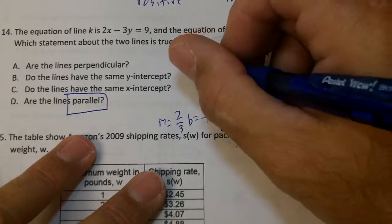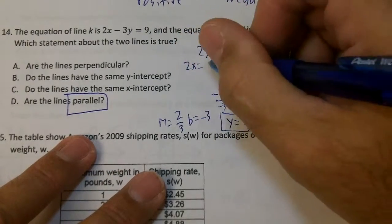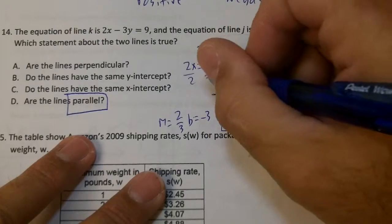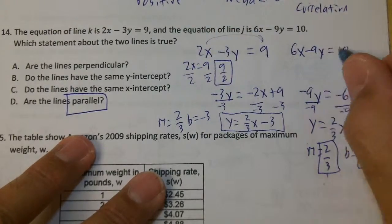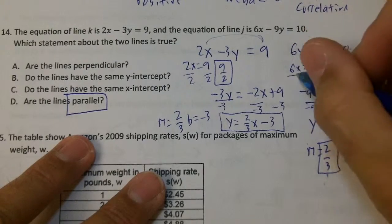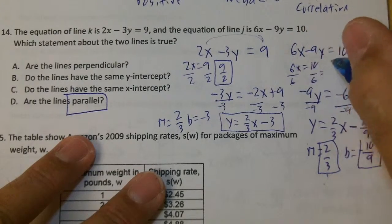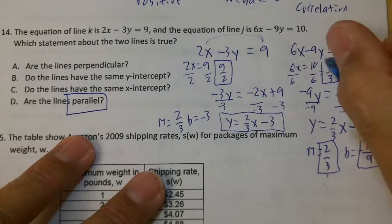To find the x-intercept, you're going to put 2x equals 9, divide by 2. 9 over 2 would be my x-intercept. Over here, 6x equals 10, divide by 6, and you would get 5 over 3 as your x-intercept.